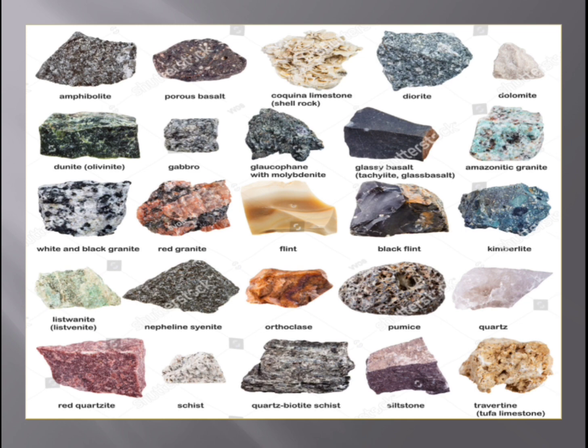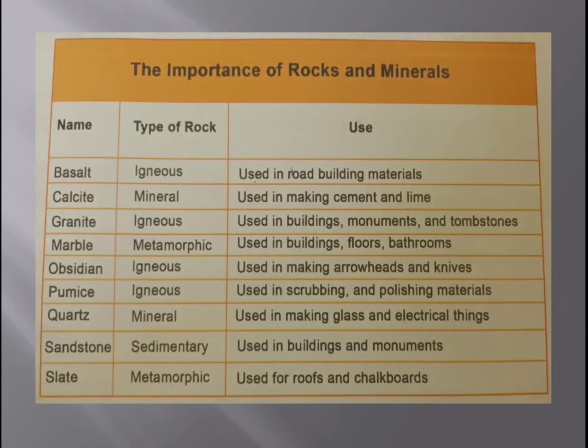Now coming to uses of rocks and minerals. Bauxite is an igneous rock formed by magma after a volcanic eruption, and it is used in building materials. Calcite is a mineral used to make cement and lime. Granite is also an igneous rock, and it is used in buildings, monuments, and tombstones.